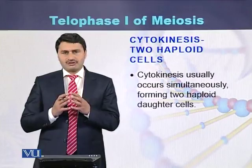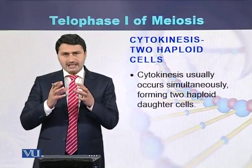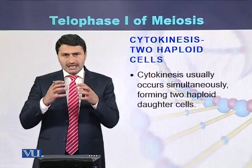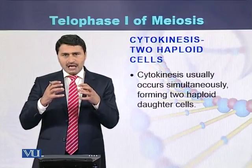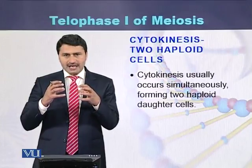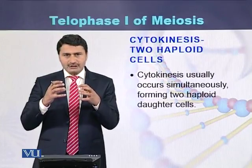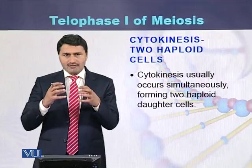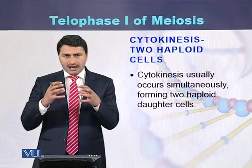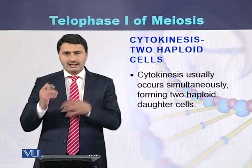Cytokinesis is the process that converts the cell into 2. Because the chromosomes have arrived at the poles, a process called cytokinesis starts that divides the cell into 2. As a result of cytokinesis, two haploid cells are produced from a single diploid cell.